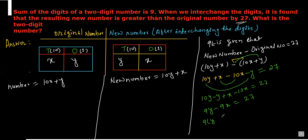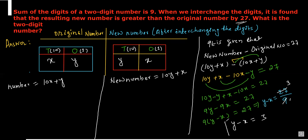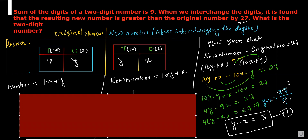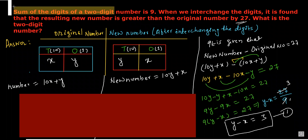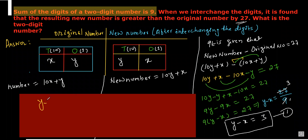Dividing both sides by 9, we get y minus x equals 3. This is equation 1. It is also given that the sum of the two digits is 9. The two digits are x and y, so y plus x equals 9. This is equation 2.